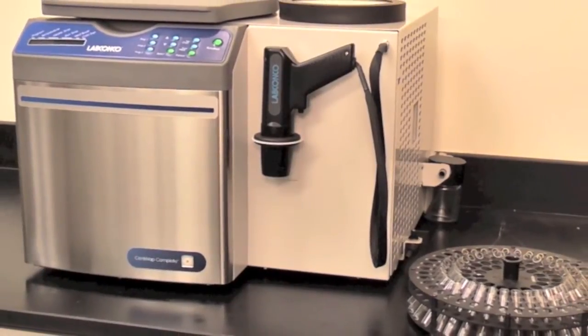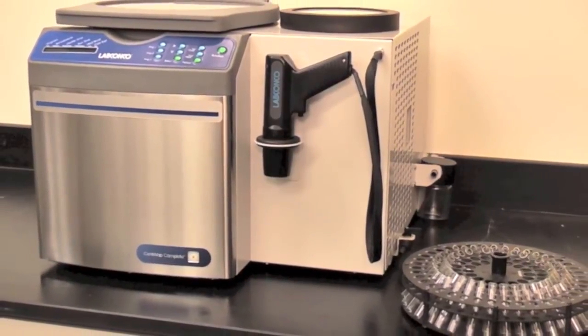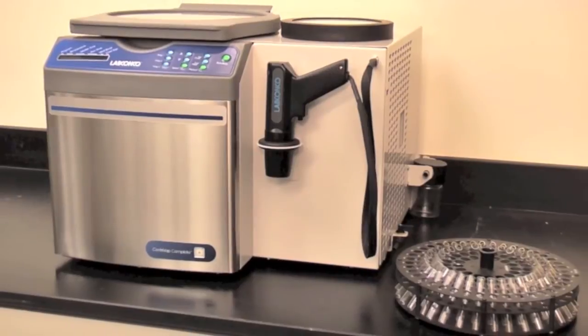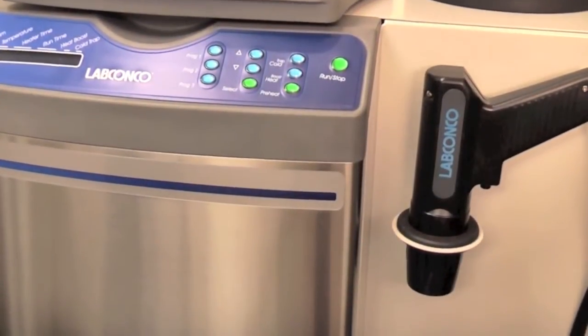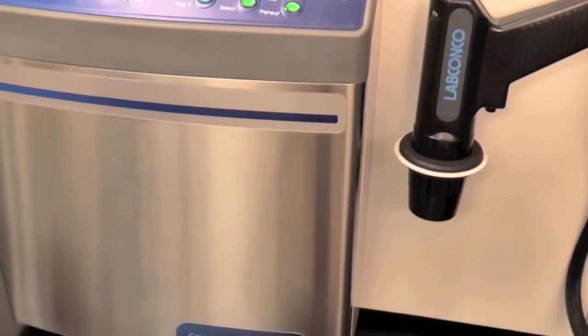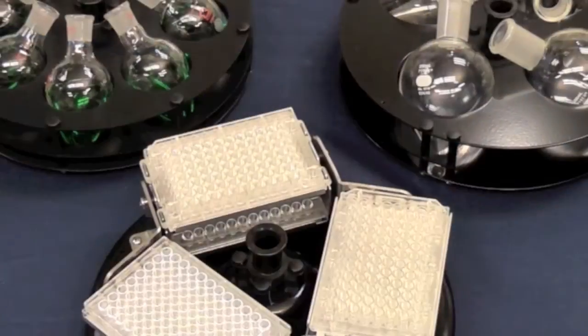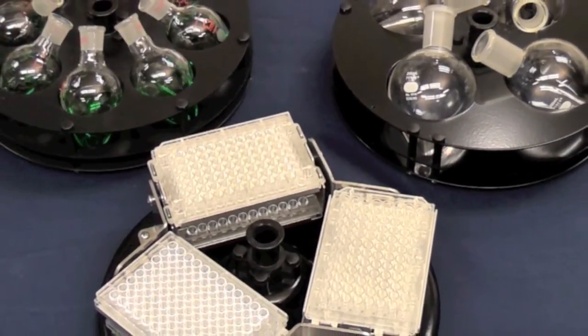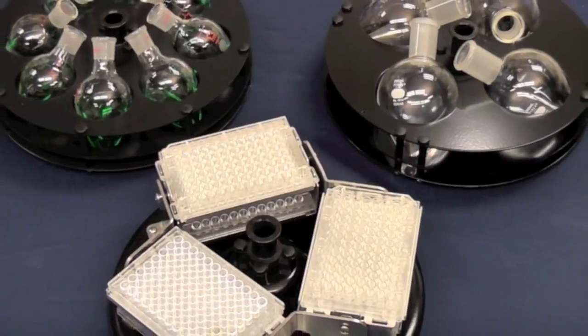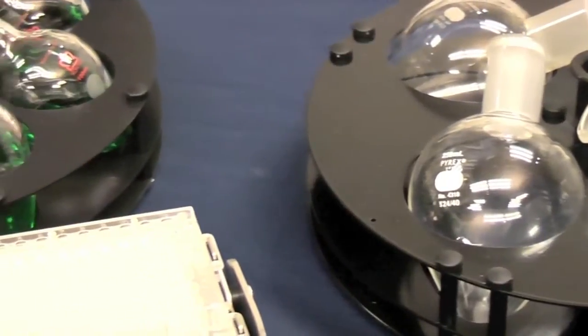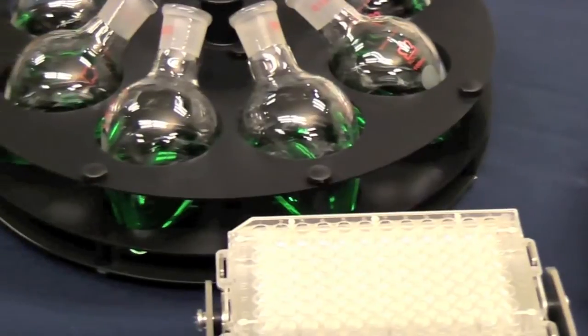The CentraVap Complete makes this step easy by integrating everything in one compact box for fast evaporation. A large chamber holds up to six micro-titer plates and 100 and 250 milliliter pear-shaped flasks. Other rotors are available.